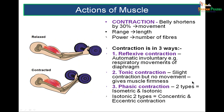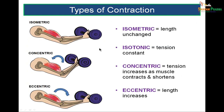Isometric contraction: the length of the muscle is unchanged — iso meaning unchanged, metric meaning length. Isotonic contraction: the tone remains constant, divided into concentric (tension increases as the muscle contracts and shortens — like picking up a dumbbell and flexing the elbow) and eccentric (the muscle length increases — like putting the dumbbell back on the bench and lengthening the biceps).